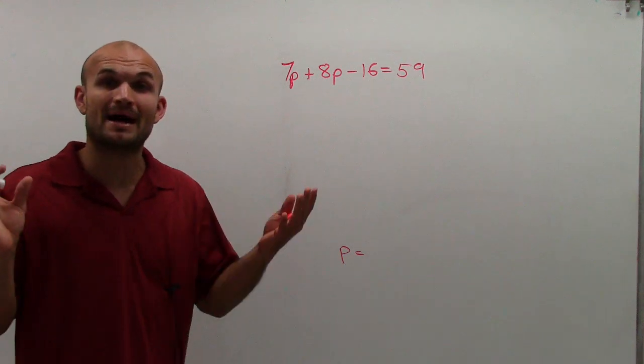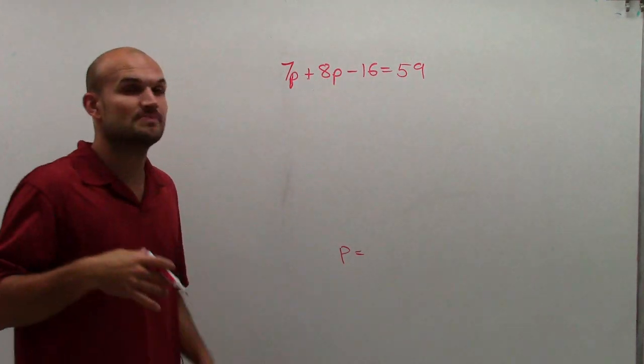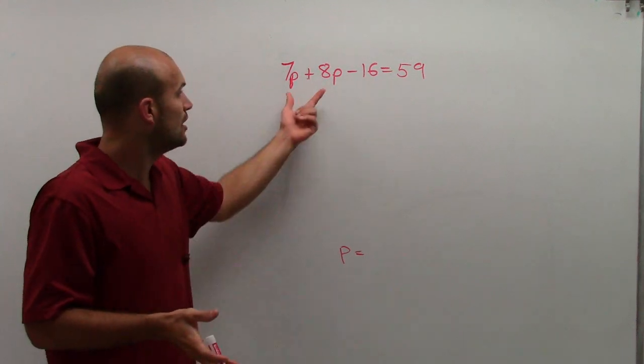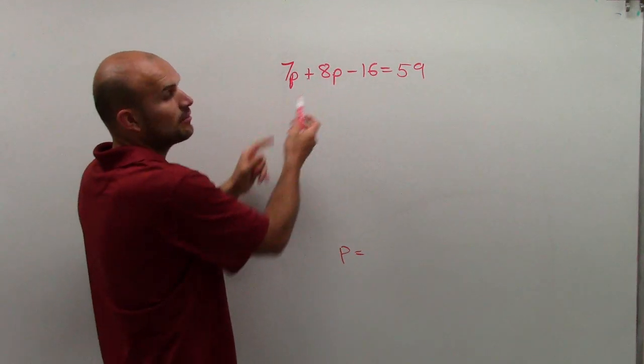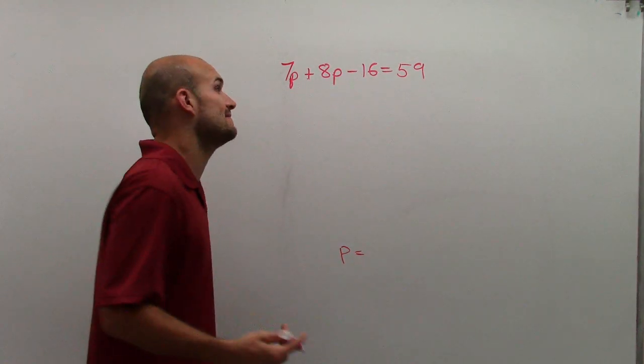What we can do is combine like terms. I can combine these because they have the same factors. In this case, they have the same variable factor, which is p. Since they have the same variable factor p, I can just add them up.